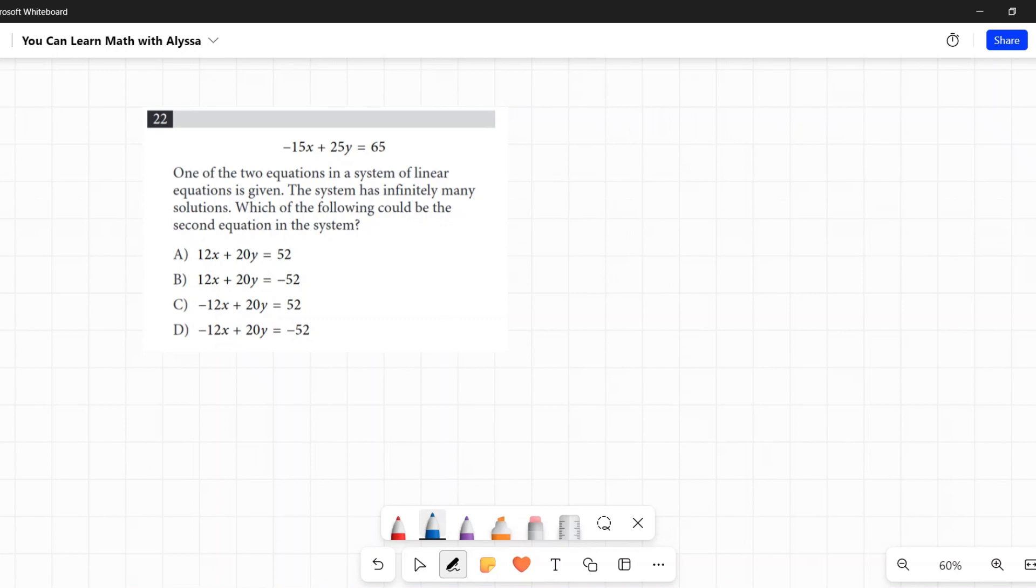When you have a system of linear equations, they're saying two lines. I have two, come here, there we go. It doesn't want to draw all of a sudden. Here we go, I have two lines. Generally speaking, when they say the solution of it, it's usually a single point where those two lines cross.